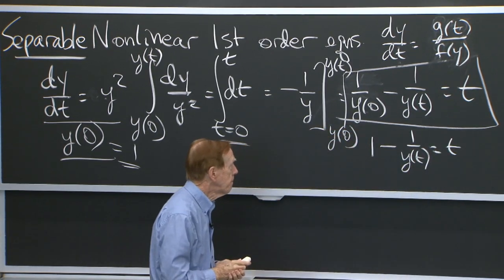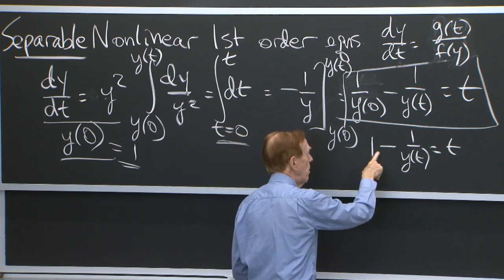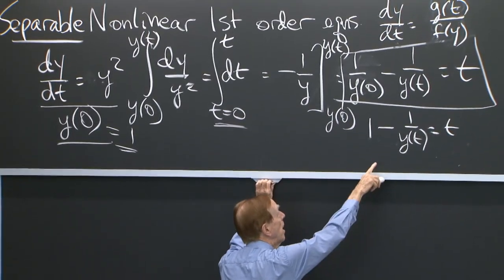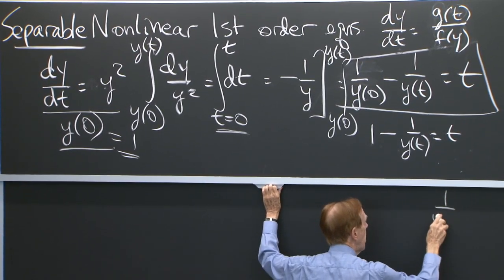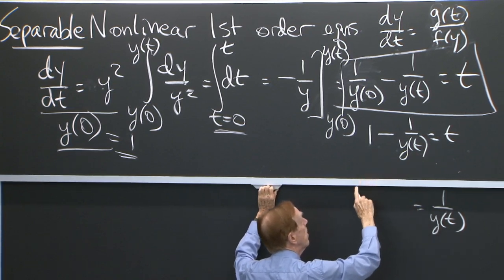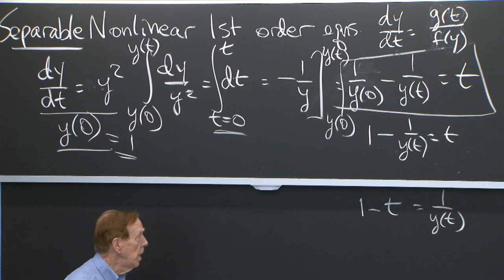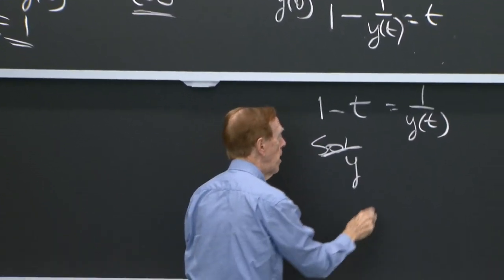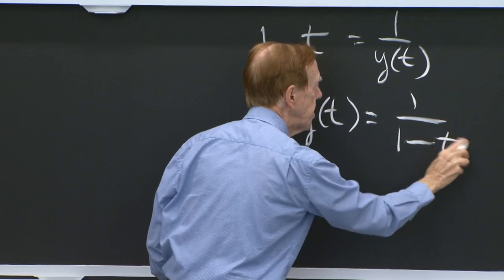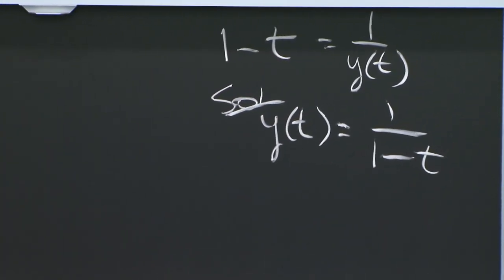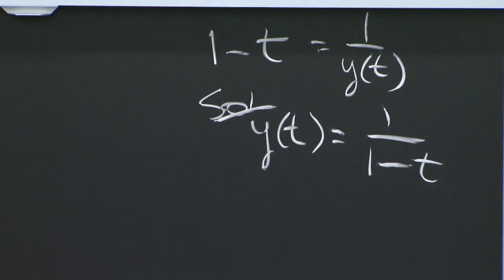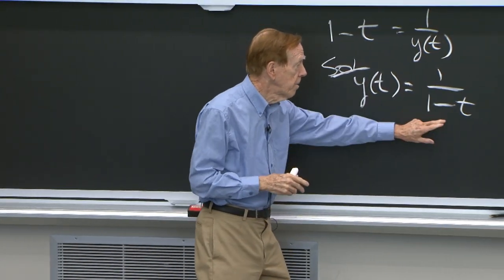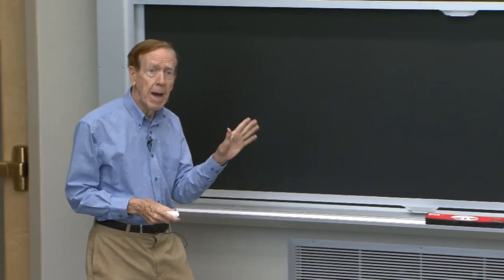I need to solve for y. Rearranging: 1 over y(t) equals 1 minus t, so the solution starting from y(0) = 1 is y(t) = 1 over (1 minus t). I can check the algebra: at t = 0, that gives 1. But let's step back and look at that answer — if we don't think about the formula, we haven't learned anything.